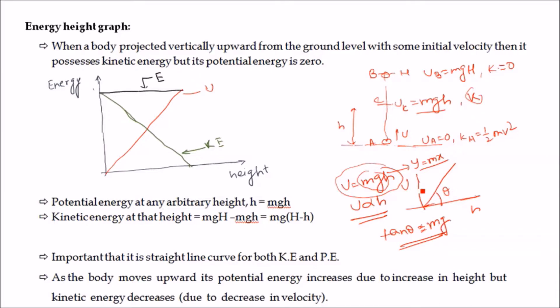If we increase the value of mass m, then correspondingly theta will increase. This means that for the same height h, if we have a higher mass, the potential energy will be more. Since potential energy equals mgh, for constant h, higher mass gives greater potential energy.